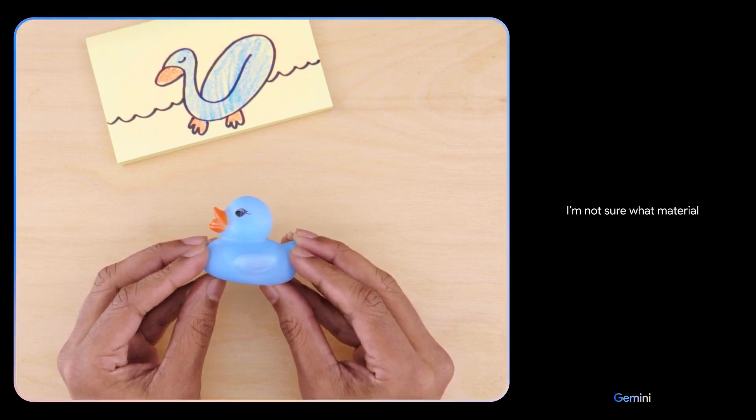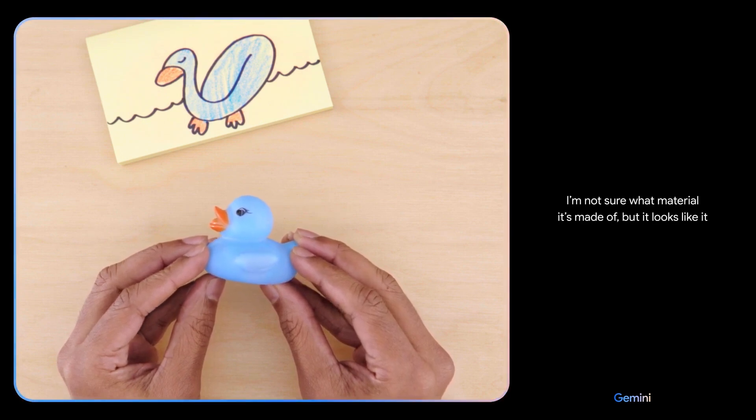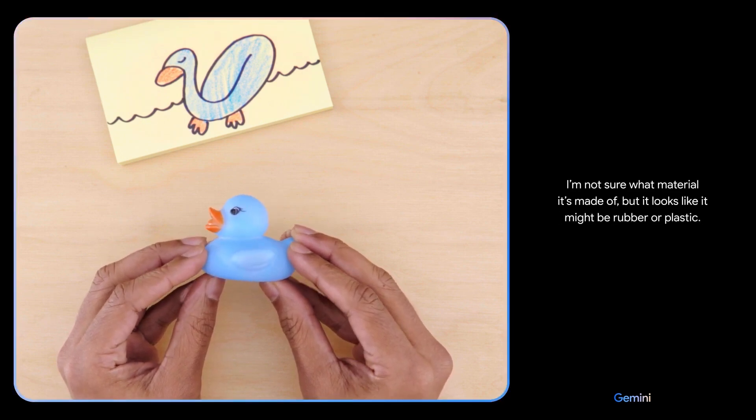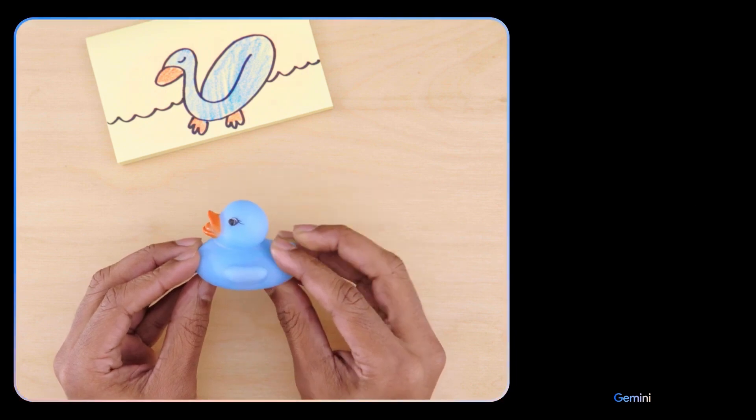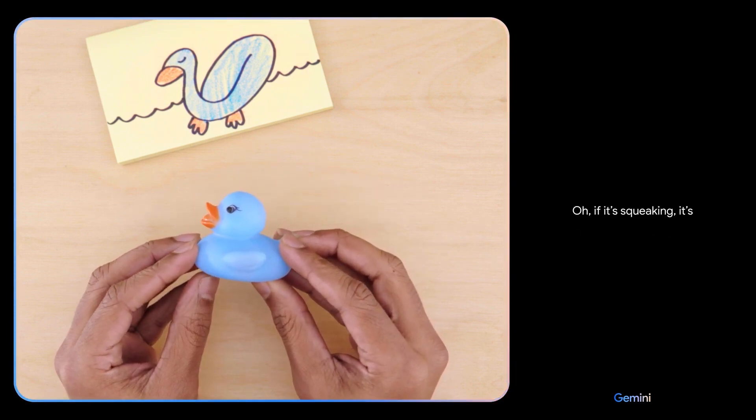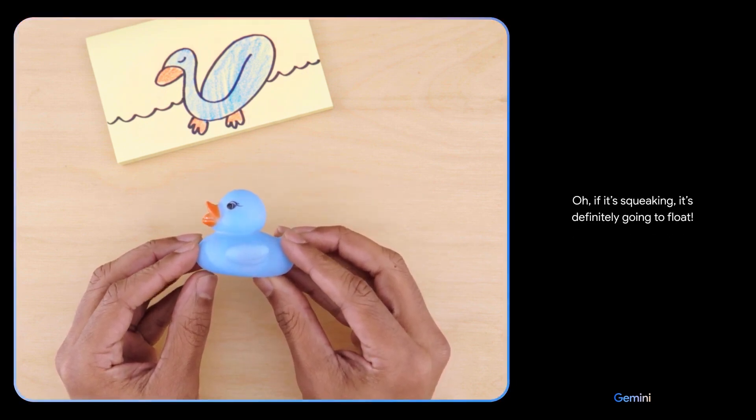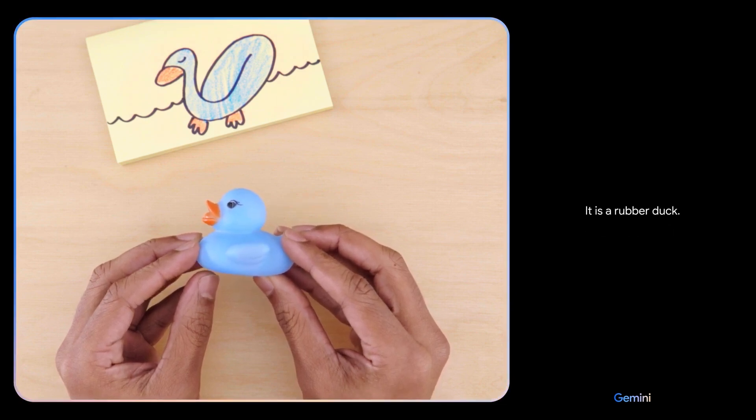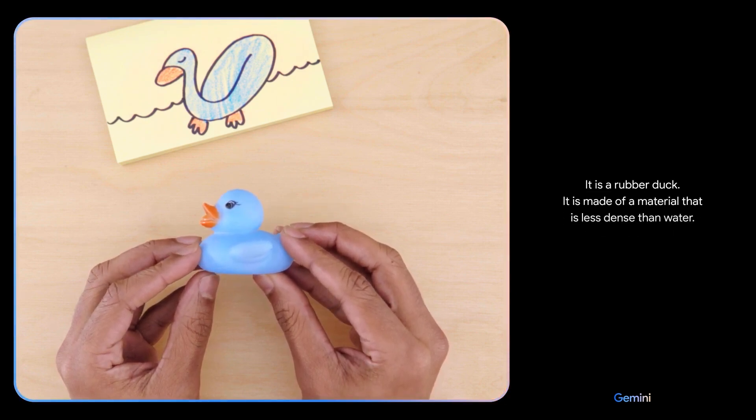Would this float? I'm not sure what material it's made of, but it looks like it might be rubber or plastic. What if I tell you it's making a squeaking sound? Oh, if it's squeaking, it's definitely going to float. Nice. It is a rubber duck. It is made of a material that is less dense than water.